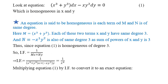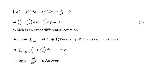We identify this as a homogeneous equation by checking degrees. M = x³ + y³ — each term has degree 3. N = −xy² — degree is 1 + 2 = 3. Since the degree of each term in M and N is the same, the equation is homogeneous. The integrating factor is 1/(Mx + Ny). Substituting: Mx + Ny = x⁴ + xy³ − xy³ = x⁴, so the integrating factor is 1/x⁴.